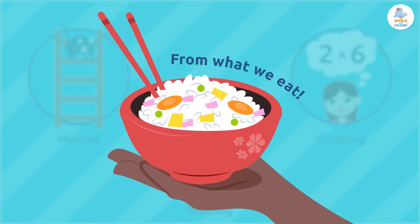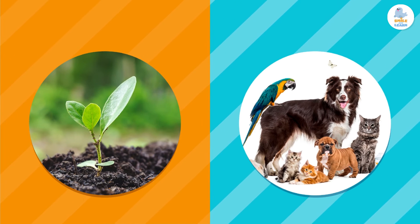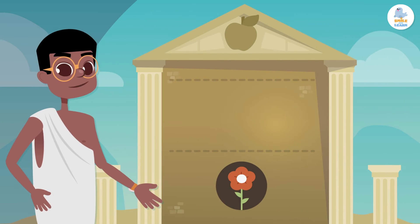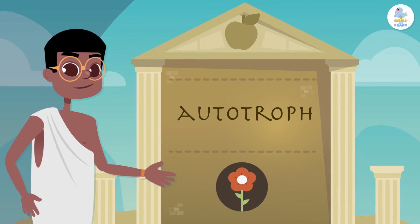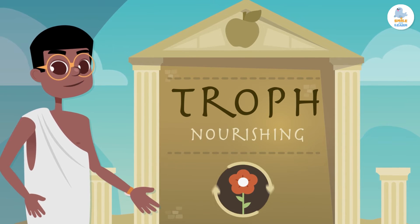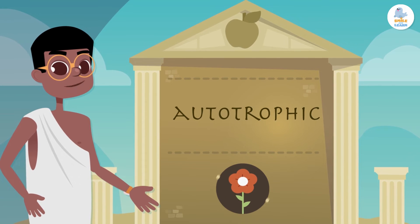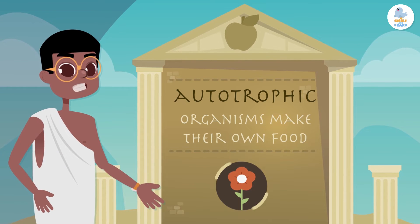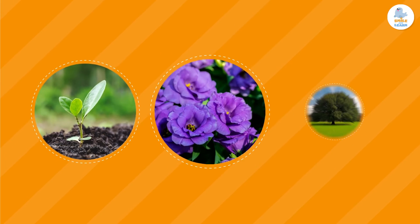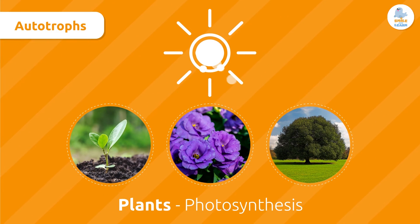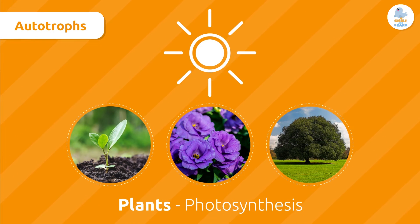Based on their mode of nutrition, living beings are classified into two major groups: autotrophs and heterotrophs. The word autotroph has a distinct definition — auto means self, and troph means nourishing. This explains that autotrophic organisms make their own food to get the energy they need. Plants are an example of autotrophic organisms because they make their own food and obtain energy during the process of photosynthesis.